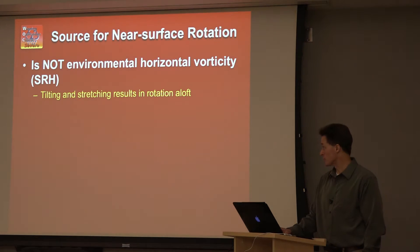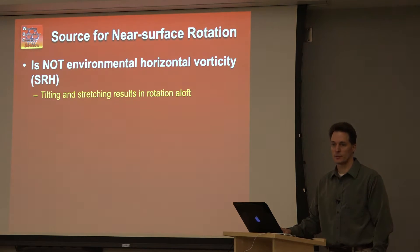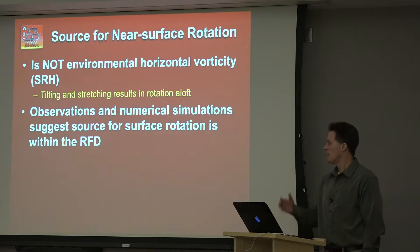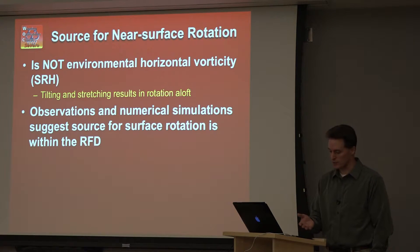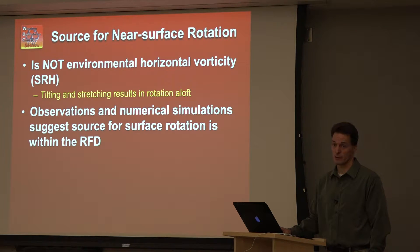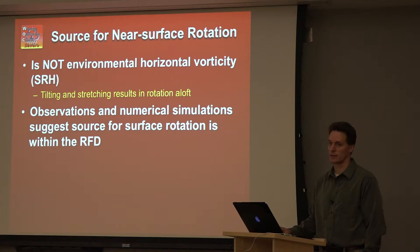Near-surface rotation isn't directly from storm relative velocity — that gives rotational flow related to the mid-level mesocyclone. Based on detailed observations from VORTEX project field campaigns and numerical simulations, it looks like the source for rotation that ultimately leads to tornado genesis is related to the rear flank downdraft, or RFD.